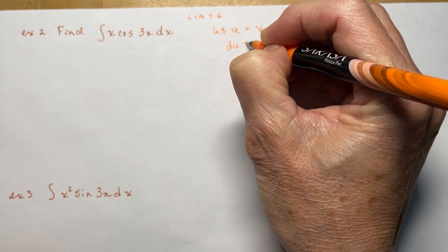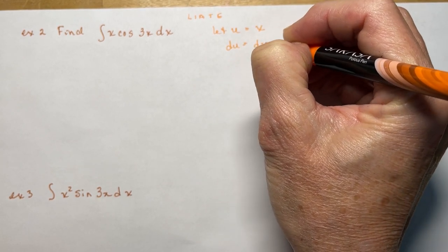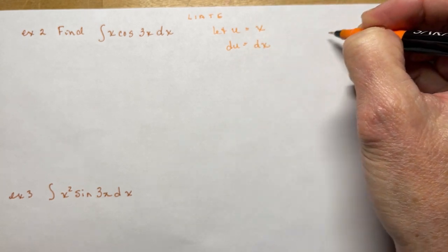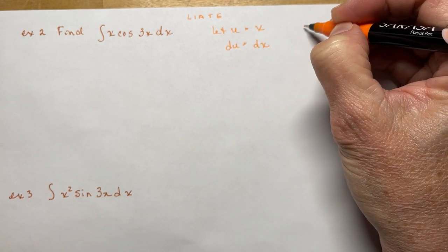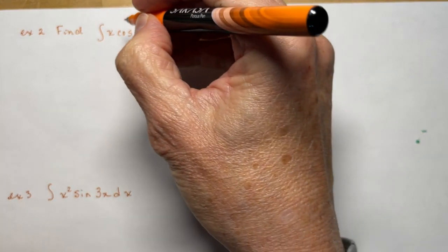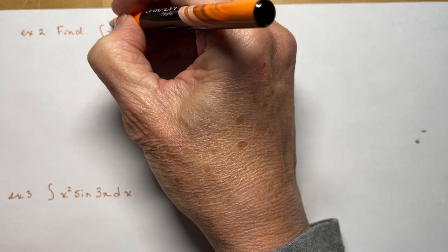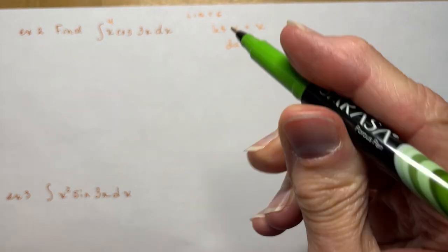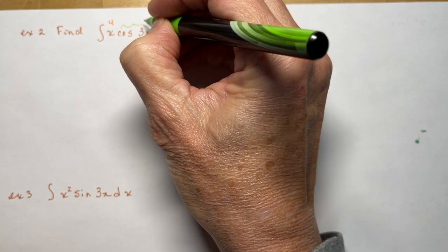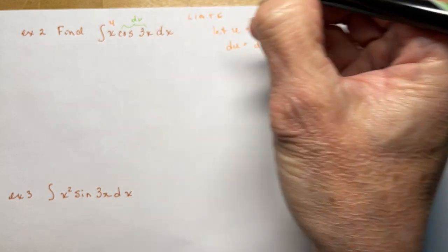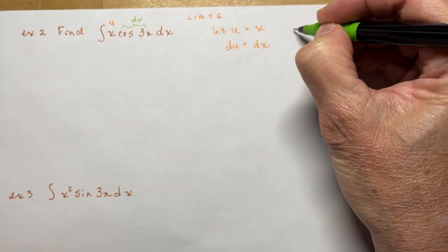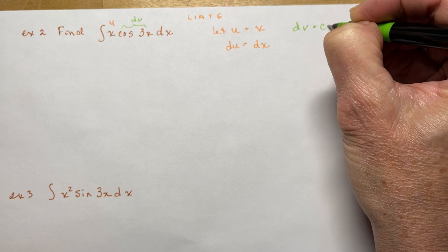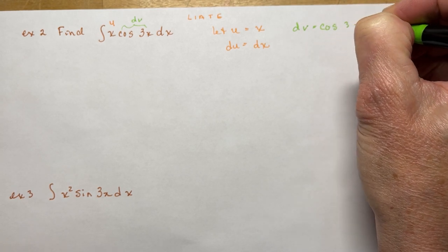So du is going to be dx — the derivative of x is 1·dx. And the other one is going to be my dv. So dv is cos(3x).